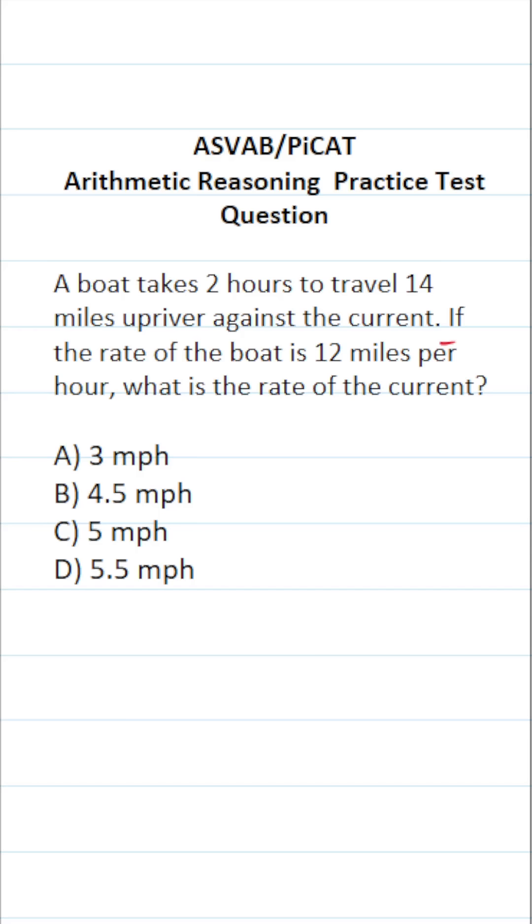If after reading this question you thought about using the distance formula to solve this one, you'd be on the right track. As you can see, we have all the elements of the distance formula. Distance equals rate times time. Right here we have a time of two hours. The boat is traveling a distance of 14 miles according to the problem and the boat itself is traveling at a rate of 12 miles per hour.